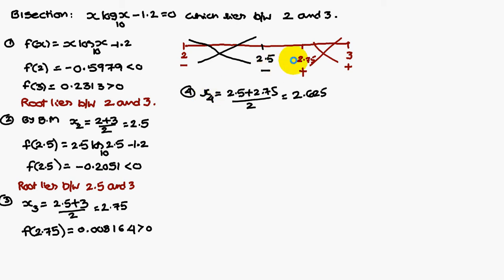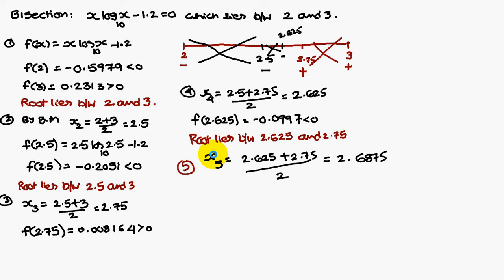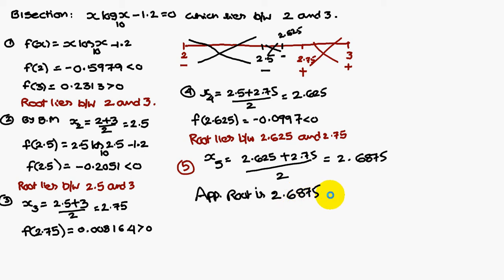x₄ is equal to (2.5 + 2.75) / 2, that is 2.625. f(2.625) is minus 0.097, which is a negative value. Therefore, the root lies between 2.625 and 2.75. Therefore, x₅ is equal to (2.625 + 2.75) / 2, that is nothing but 2.6875. So the approximate root of the given equation is 2.6875.